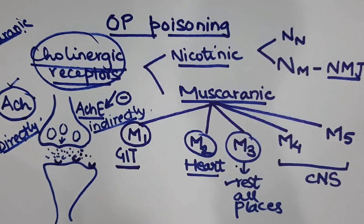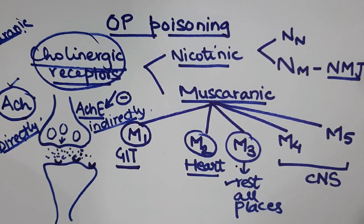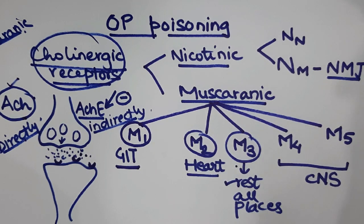Talking about the autonomic nervous system, we have four groups of drugs: the cholinergics, the anticholinergics, the adrenergics, and anti-adrenergics. In organophosphorus poisoning, we are basically going to discuss cholinergic drugs, their receptors, uses, and actions.